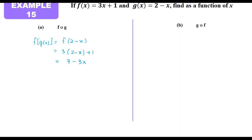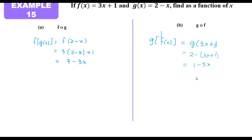For g composite f, we substitute f(x) into g. Since f(x) = 3x + 1, we substitute into g(x) = 2 − x: we get 2 − (3x + 1), which gives 1 − 3x. So we see that f composite g is not equal to g composite f.